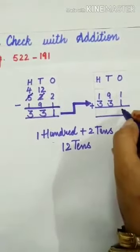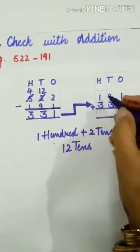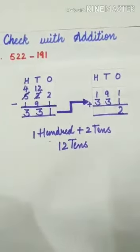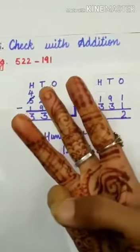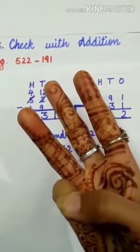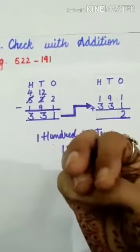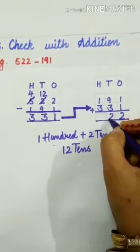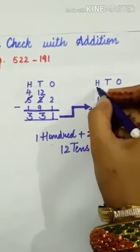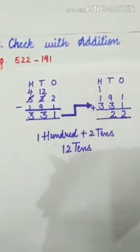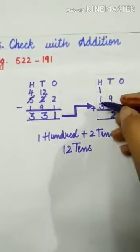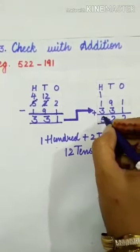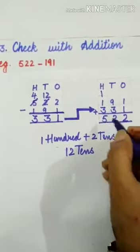Now 1 plus 1 is 2. 9 plus 3: keep 9 in your mind and open your 3 fingers. Now start counting after 9: 10, 11, 12. So what we have to write down here? 2 at the tens place and 1 carry at the hundreds place. Now 3 plus 1 is 4. 4 plus 1 is 5.